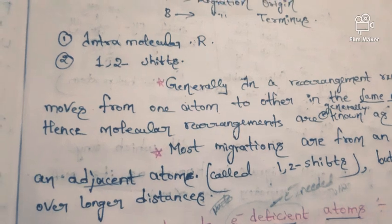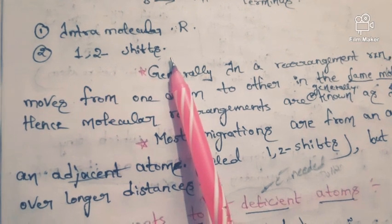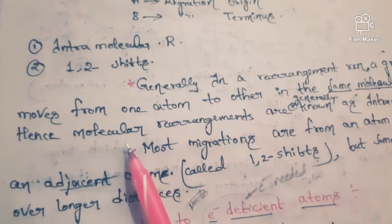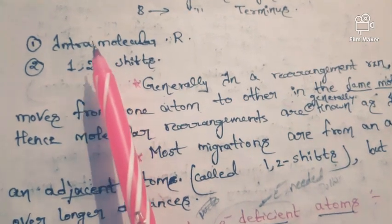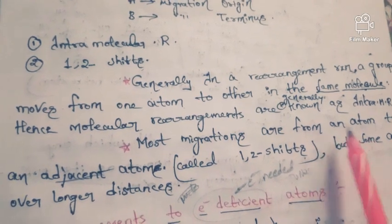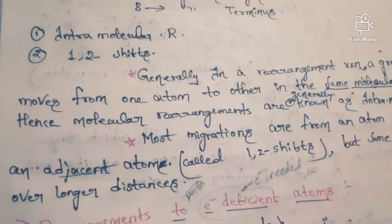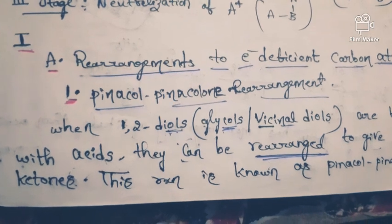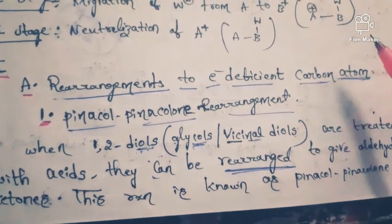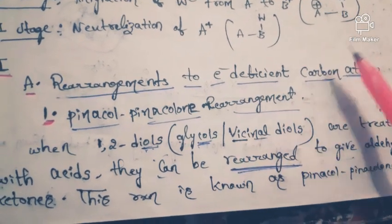The entire molecular rearrangement can be observed in two things: intramolecular rearrangement and 1,2 shifts. Intra means within the molecule — if the rearrangement occurs within the molecule from one atom to another atom, that is intramolecular rearrangement. Most migrations are from an atom to the adjacent atom, that means from the first position to the second position, so these shifts are called 1,2 shifts. In the syllabus we have rearrangements to electron-deficient carbon atoms, nitrogen atoms, and oxygen atoms. In this video I am going to explain the rearrangements to electron-deficient carbon atoms.